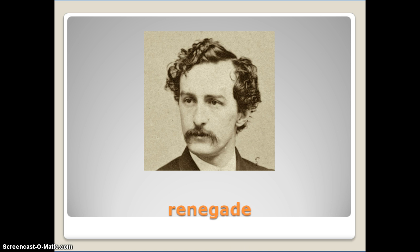Next word is renegade. That gentleman in the picture is John Wilkes Booth, the assassin of Abraham Lincoln — he would be considered a renegade. Renegade is a noun and also an adjective. The first syllable is accented. The noun form is one who leaves a group, or an outlaw. The adjective means traitorous, unconventional, or unorthodox. Someone like John Wilkes Booth would be a traitor to his country.